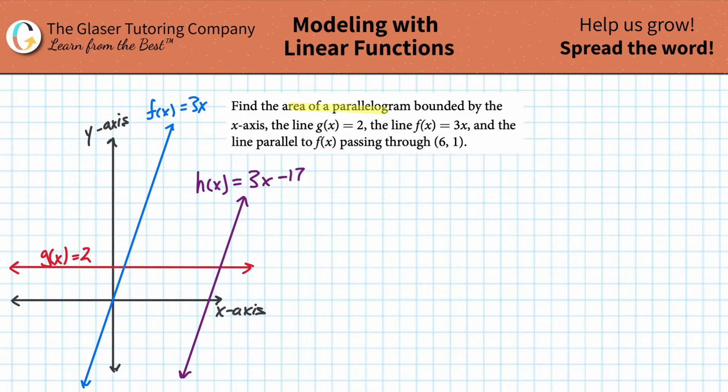Today, we're going to find the area of a parallelogram bounded by the x-axis, the line g(x) = 2, the line f(x) = 3x, and the line parallel to f(x) passing through (6, 1).